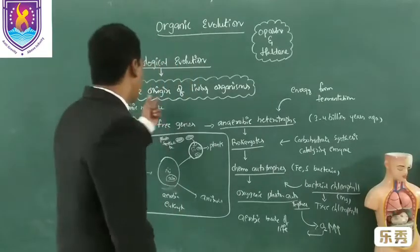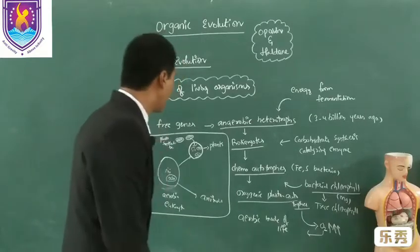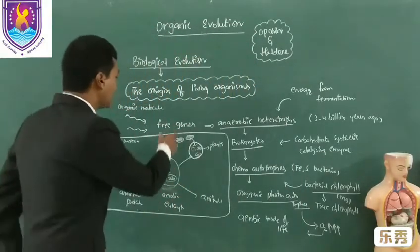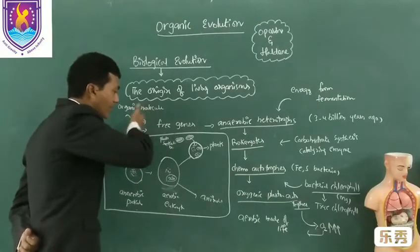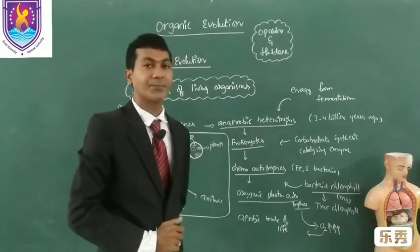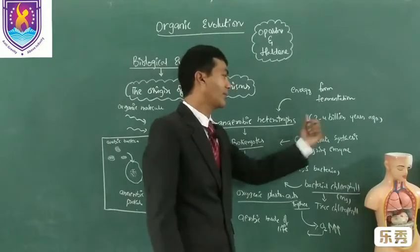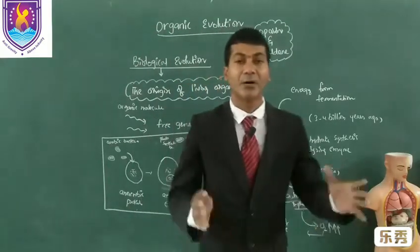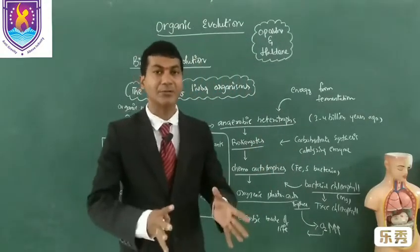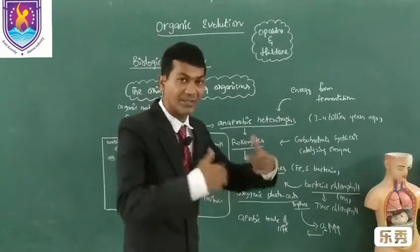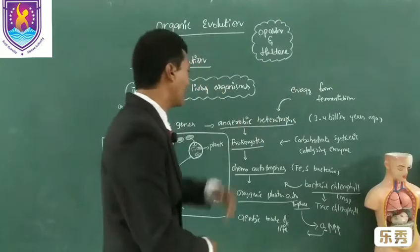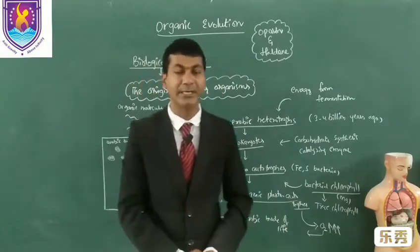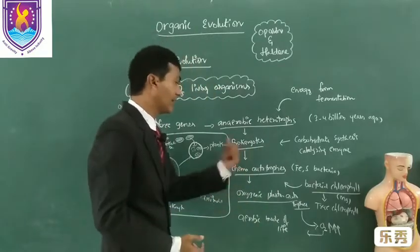Now let us discuss the origin of living organisms. The coacervates became free genes. The free genes absorbed organic molecules from their surroundings and became anaerobic heterotrophs. We believe that anaerobic heterotrophs evolved before 3 to 4 billion years ago. These anaerobic heterotrophs received energy from the fermentation of organic molecules present in the pre-biotic soup. These anaerobic heterotrophs contained clumps of nucleotides with 2 to 3 DNA molecules, which we believe were prokaryotes.